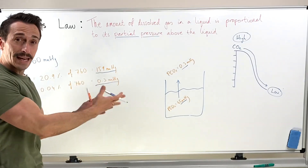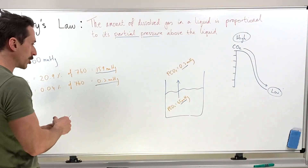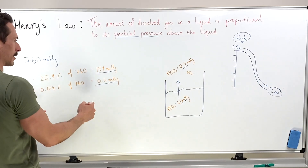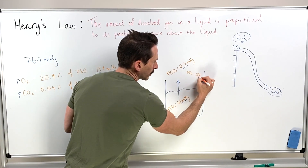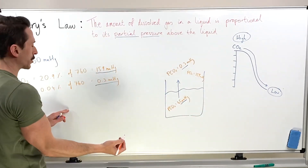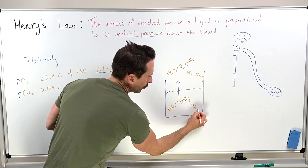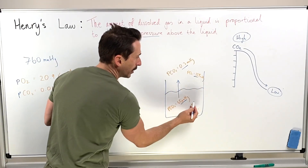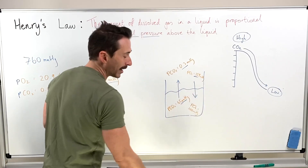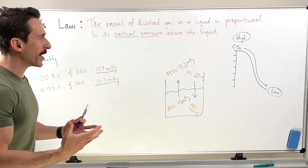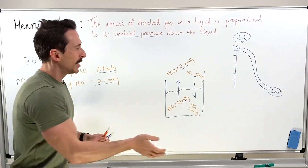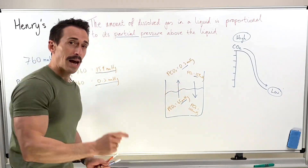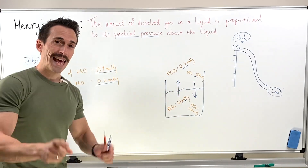That is Henry's law in action. What about oxygen? If the partial pressure of oxygen in the atmosphere is 159 mmHg and the PO2 in the liquid is 100 mmHg, the outside has the higher partial pressure, so oxygen moves down its pressure gradient into the liquid. Importantly, the partial pressure of carbon dioxide does not affect the diffusion of oxygen, and the partial pressure of oxygen does not affect the diffusion of carbon dioxide — in this scenario they're diffusing in opposing directions.